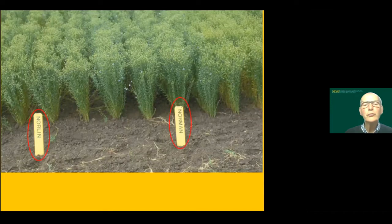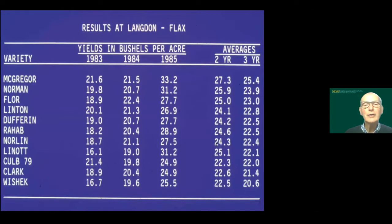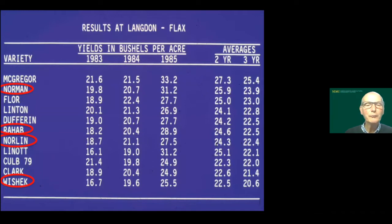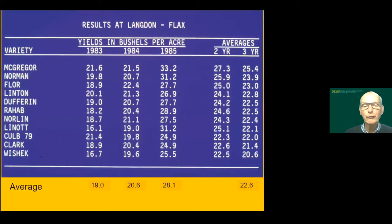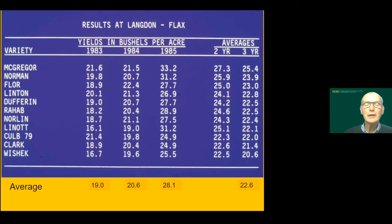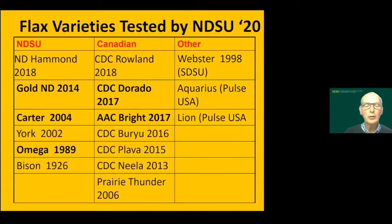I'm going to show you some historical data from the 80s — this data is from Langdon, one of our northern locations that typically has very good yield potential. Looking at yields from 1983, 84, and 85, you can see that the same varieties differ in yield level. For instance, in 1985 the yield level was quite a bit higher. So we have genetics, we have management, but always we have the environment that gives us the challenge to reach top yields.